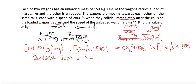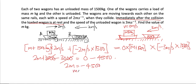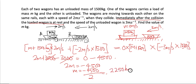Negative three multiplied by 1500 gives negative four thousand five hundred. So we have two m equals negative four thousand five hundred. Therefore m equals negative four thousand five hundred divided by two. The negative just indicates direction, so since we are looking at mass we discard the negative — the answer is two thousand two hundred and fifty kg.